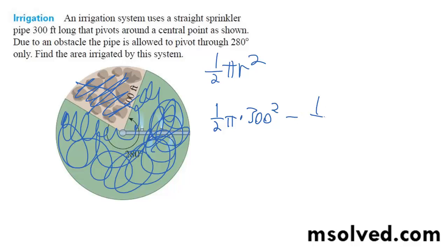minus one half times 80 degrees times pi over 180, times 300 squared.